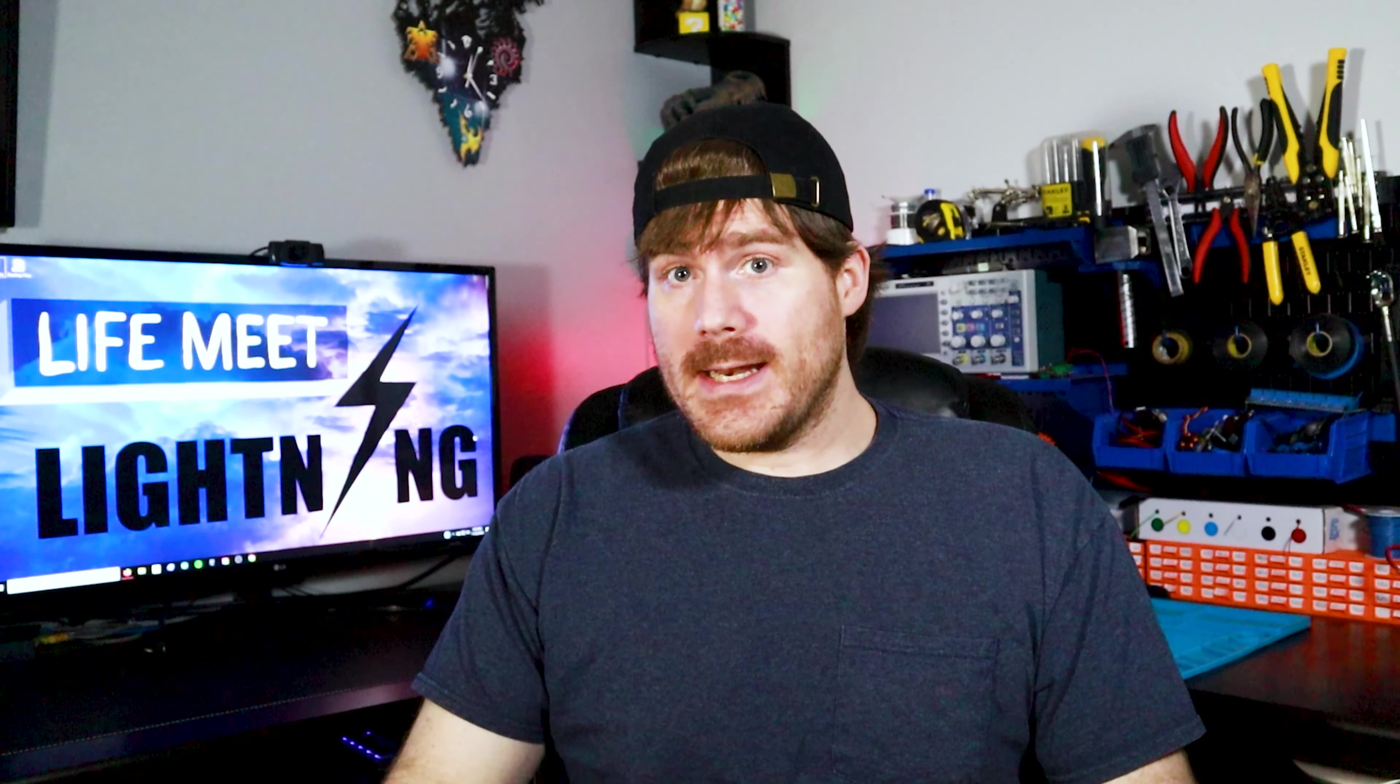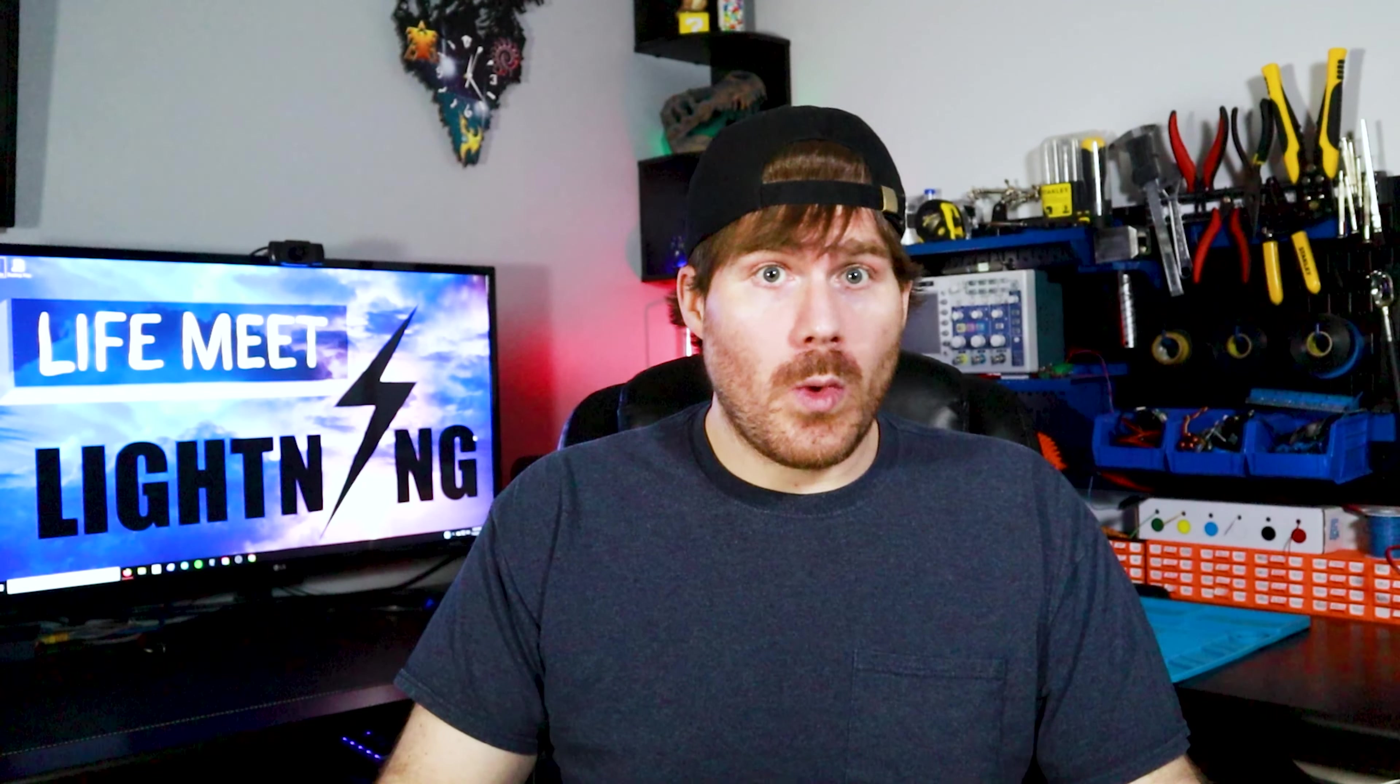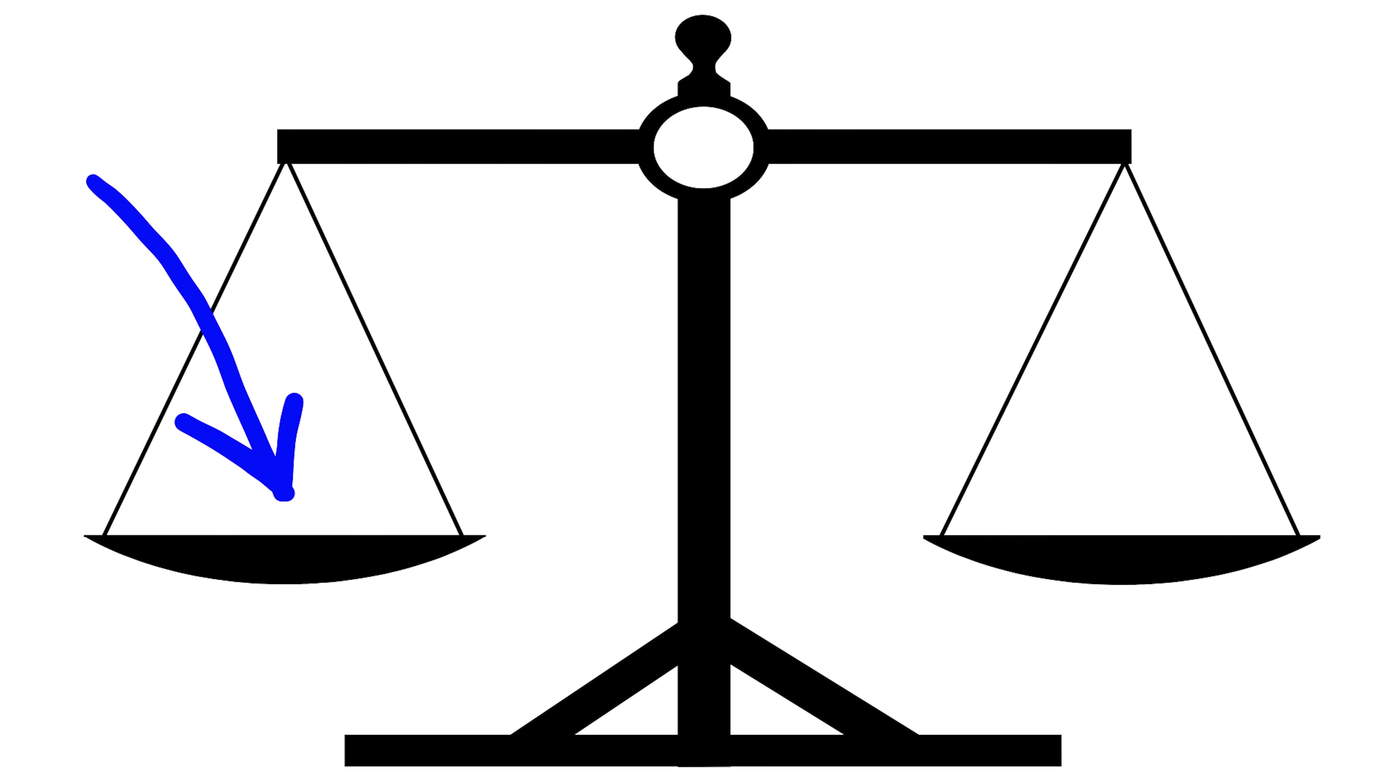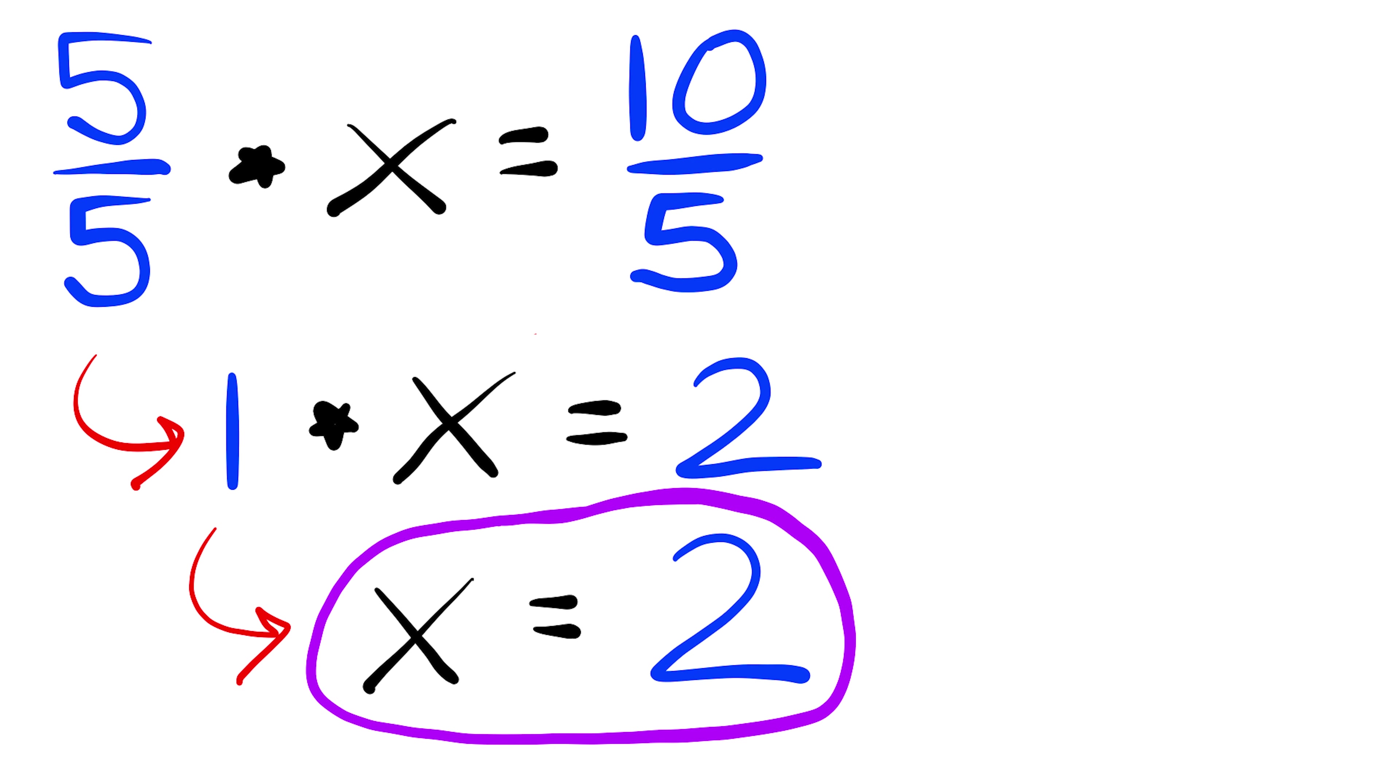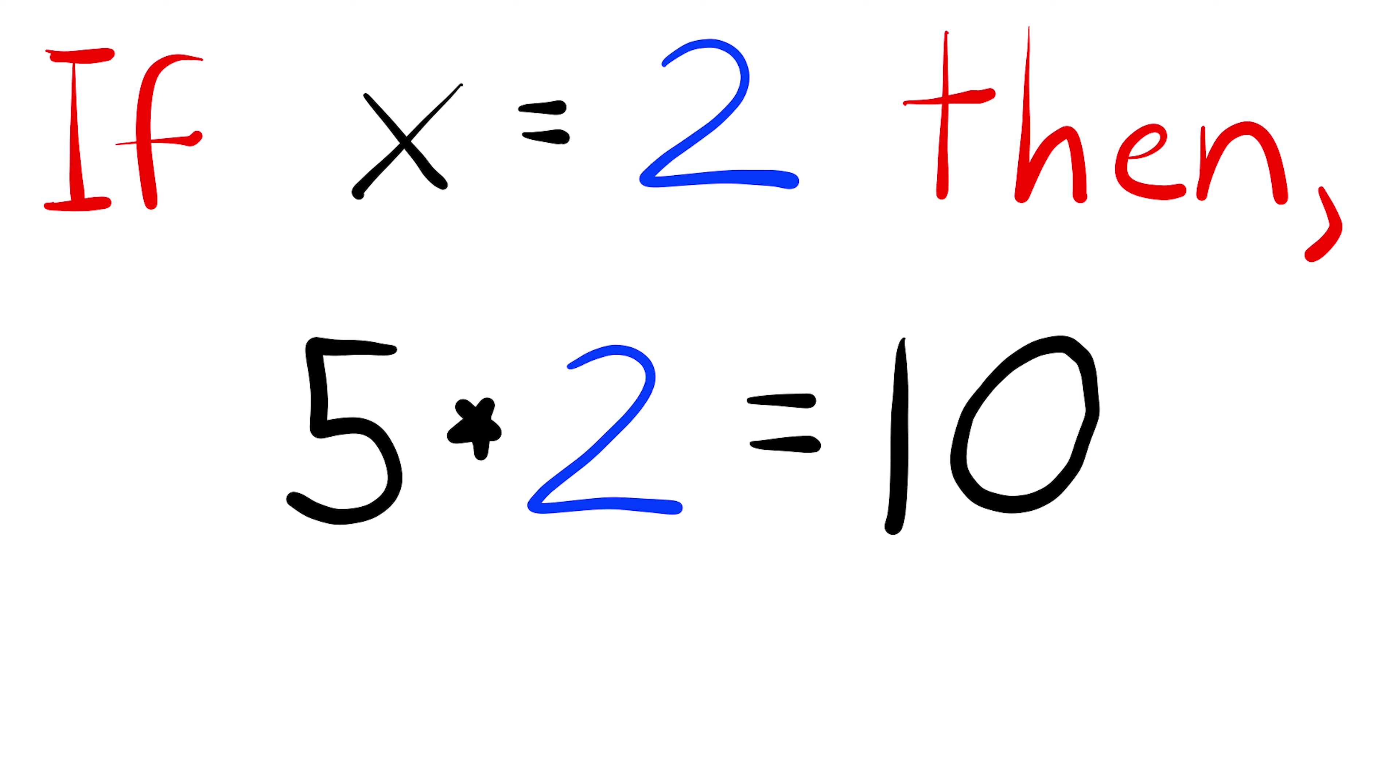Here's a golden rule of manipulating equations. Anything you do on one side of the equation you must also do to the other side of the equation for the equation to remain true. So in this case when we divide five by itself on the left side of the equation we must also divide the other side of the equation by five. In this case we end up with X equals two. If we replace X in the original equation with two we'll find our equation is still an equation since both sides are equal.